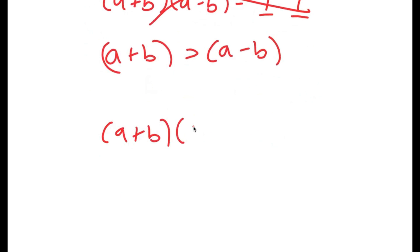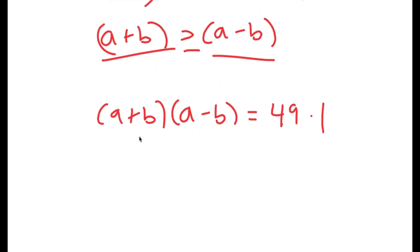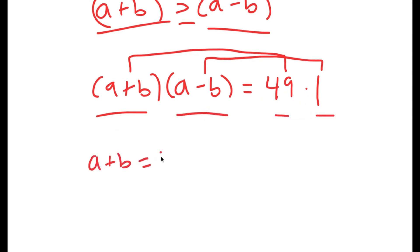Going back to a plus b times a minus b is equal to 49 times 1. So because a plus b is greater than a minus b, we can say that a plus b is equal to 49 and a minus b is equal to 1, because 1 is less than 49 and a minus b is less than a plus b. And this is also in the form of a number times another number.